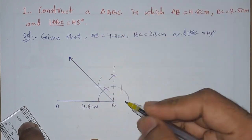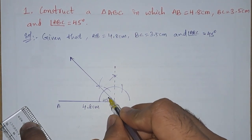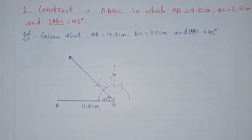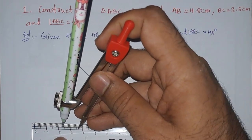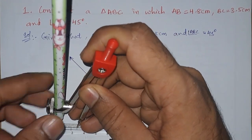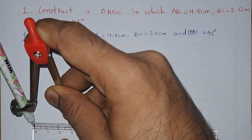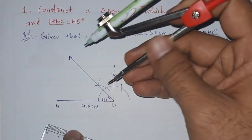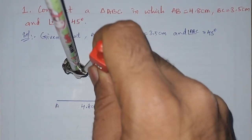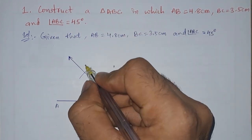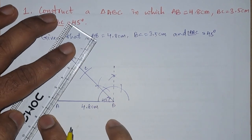Now we got the ray of 45 degrees. Here the angle is 45 degrees. Next, after getting this 45 degrees, we have to see from B - BC is 3.5 centimeter radius. So take your ruler and from 3.5 I am putting the steel needle there and stretch it up to zero, that is 3.5 centimeter. Now we will cut this ray. The point where it cuts is our C.